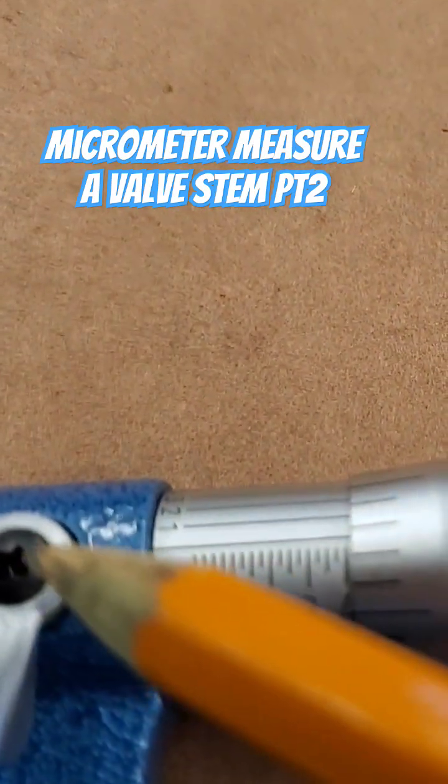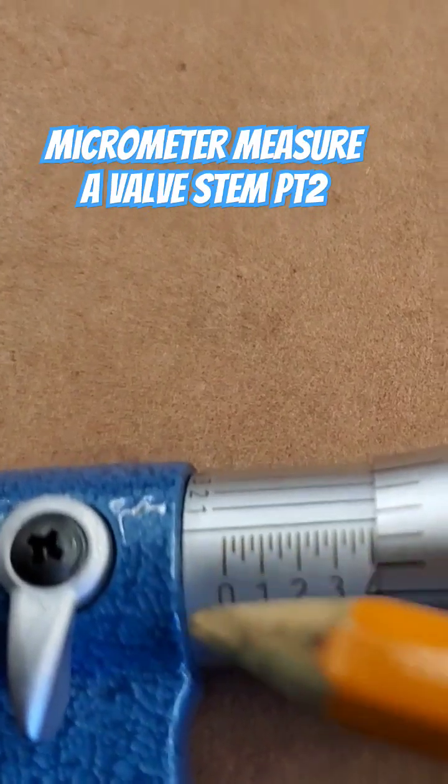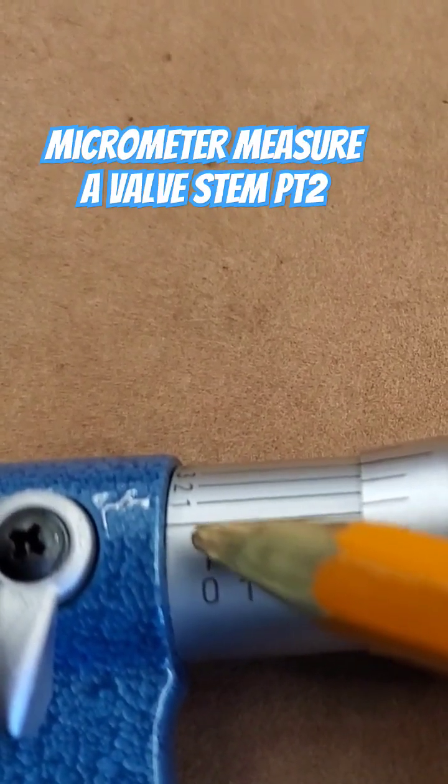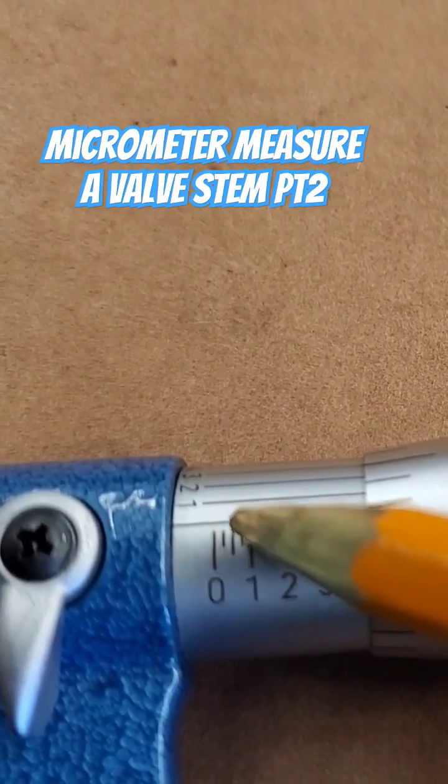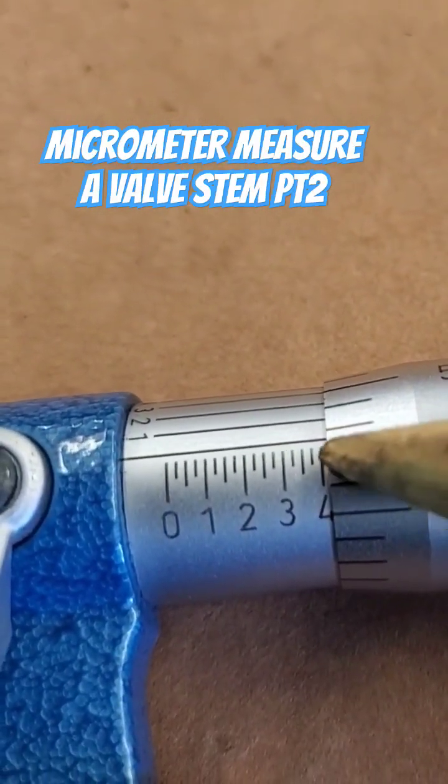And then after that, be aware that these are increments in 25. So the line goes from 0 to 25 and 50, then 75, then one. So I see right here that the line is